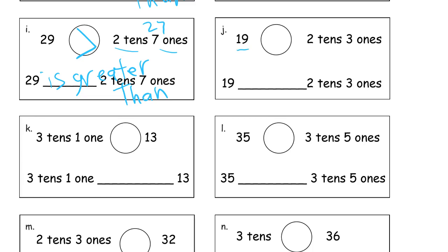Now we're looking at 19 and 2 tens 3 ones. So 2 tens is 10, 20, and 3 more ones, 23. That's going to be the number 23. 23 is going to be greater than 19, which means also if 23 is greater than 19, then 19 is less than 23. So 19 is less than 2 tens 3 ones.